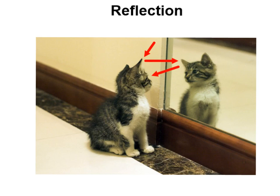Here's an example of a light wave being reflected. We have light striking the kitten's ear and that wave is reflected. We also have an example of this light wave being reflected by the mirror itself, so that wave is then reflected into the kitten's eye and the kitten can see its own reflection in the mirror.